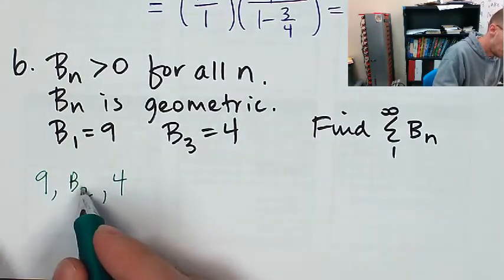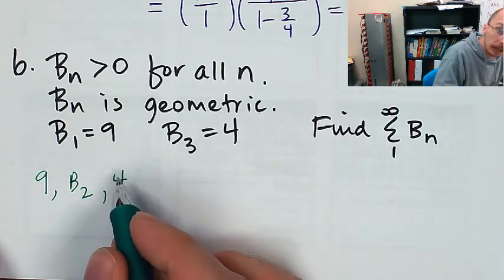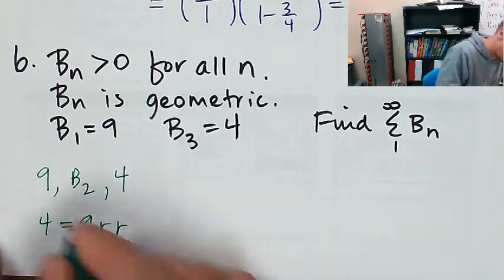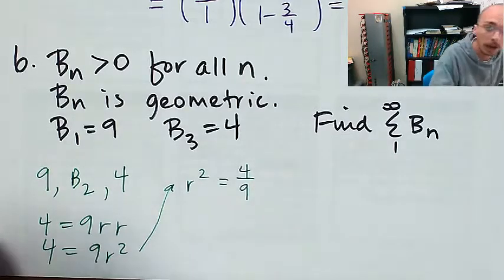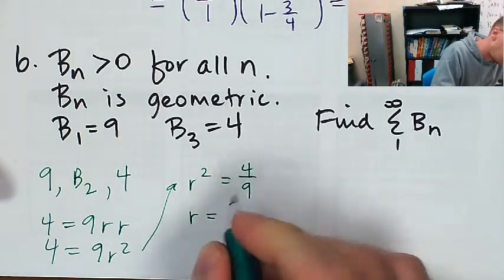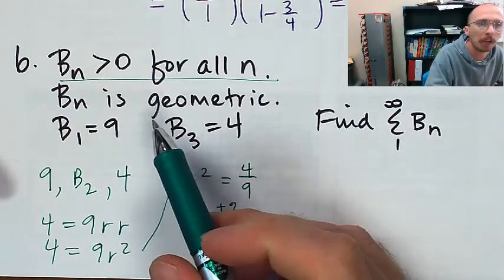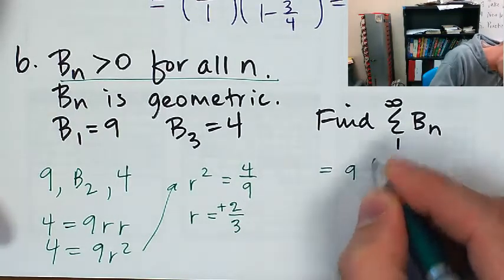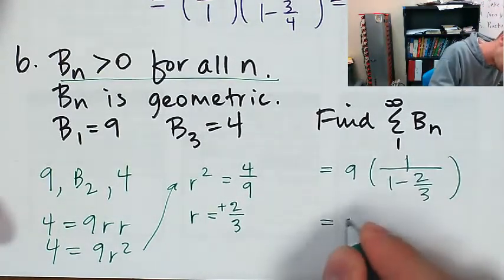So b_1 is 9, b_2 is 9 times r, and b_3 is 9 times r squared equals 4. That gives r squared equals 4/9, so r is either 2/3 or negative 2/3. Since all terms are positive, r must be positive 2/3. The sum is 9 times 1 over 1 minus 2/3, which is 9 times 3, giving us 27.